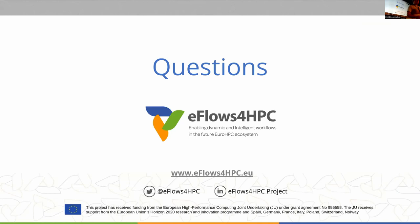That concludes the first part of the session. Regarding questions — on how to handle different versions of the same software: the software catalog is a Git repository. You can have branches and tags, and when building the execution you can point to a specific version. When creating the container, you can reference a specific tag or branch of the software. So you can have a specific container for each version, and if the invocation is the same between versions you don't need to change it.